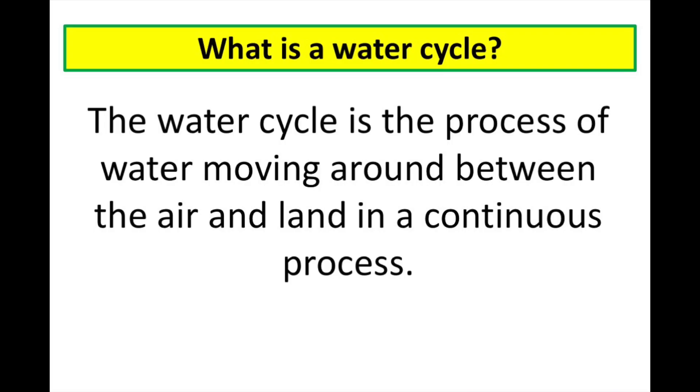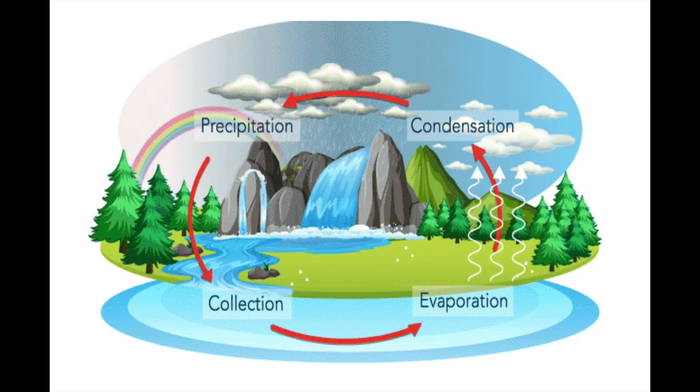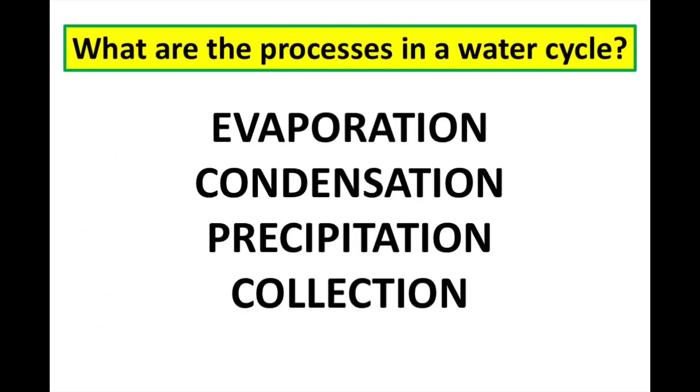Water cycle is the process of water moving around between the air and land in continuous process. Water cycle involves four processes: evaporation, condensation, precipitation, and collection.